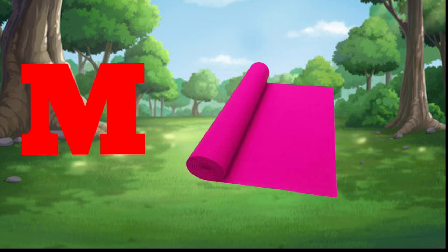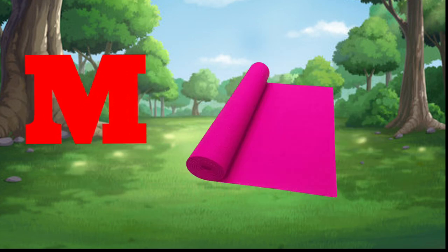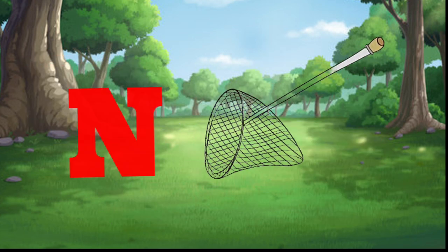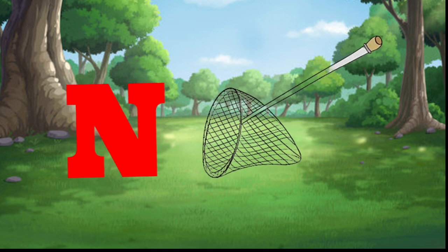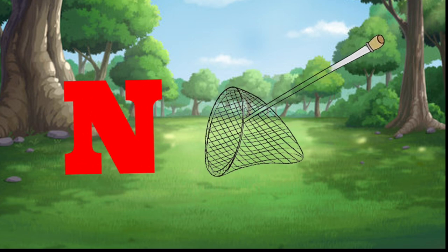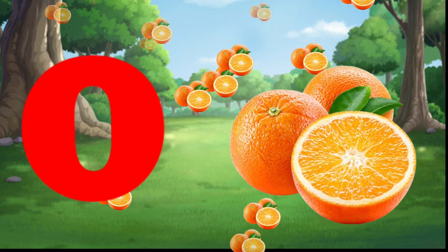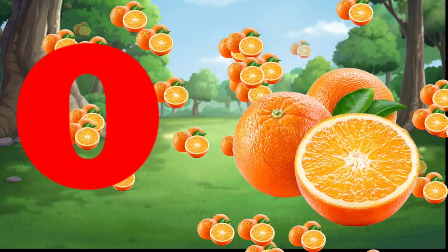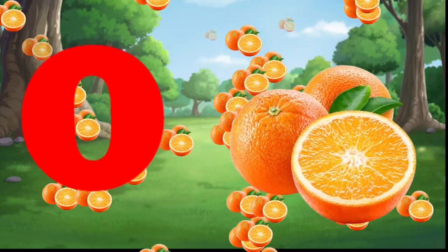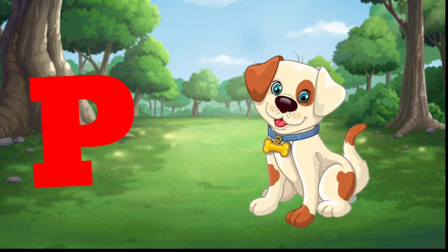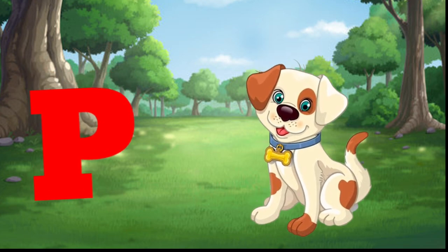M is for mat, m-m-mat. N is for net, n-n-net. O is for orange, o-o-orange. P is for pet, p-p-pet.